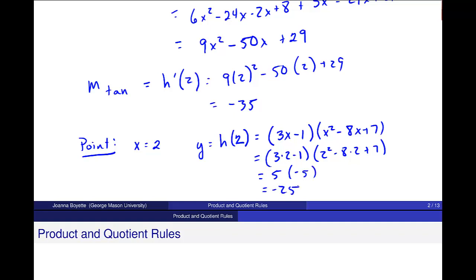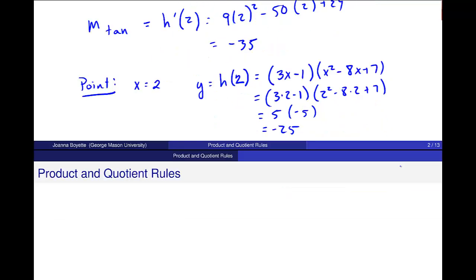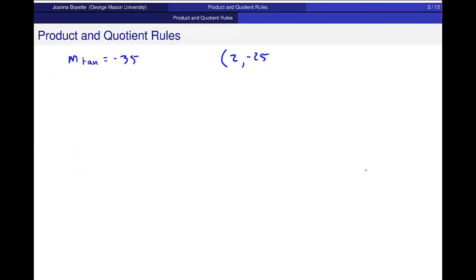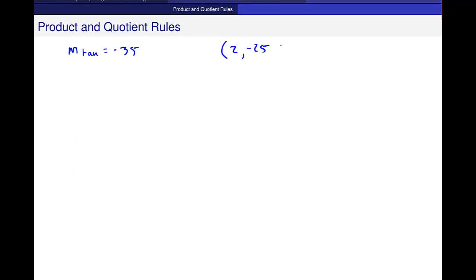So my point here, maybe I'll just scroll down a little bit so that we can see. I have the slope of the tangent line that we just found is negative 35, and my point is 2, negative 25. So I want to go ahead then and use this information. The equation of the line isn't changing, this is point slope form, y minus y2 equals m times x minus x2.